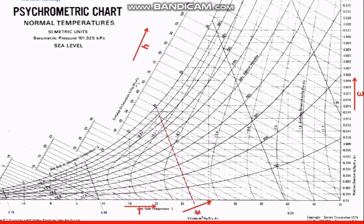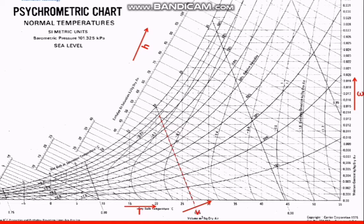The entropy at saturation lines follow a diagonal pattern across the chart. We can be given any two values to locate a point — such as relative humidity and dry bulb temperature, or the humidity ratio — and then read off the other properties from that point.